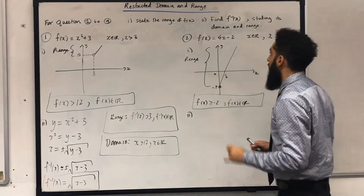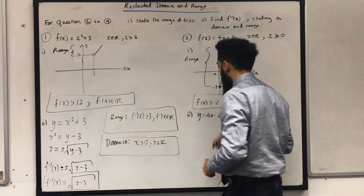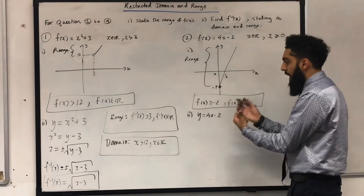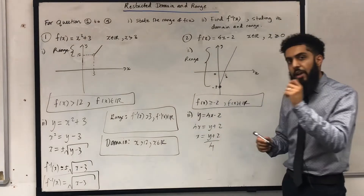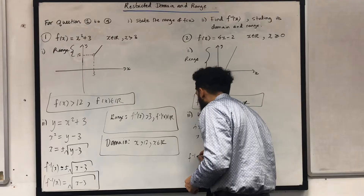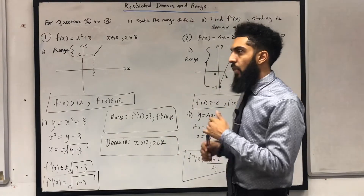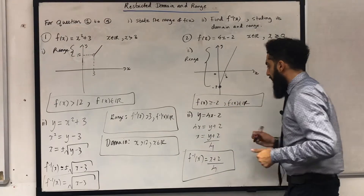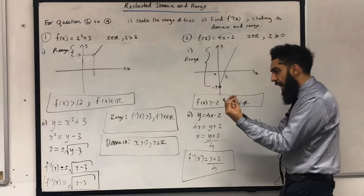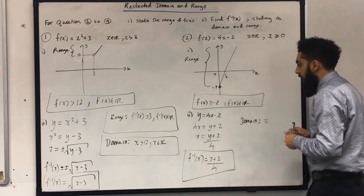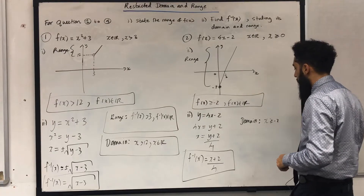For part 2, I want to find the inverse function of f. My first step is to let y equal 4x minus 2, then make x the subject. I have 4x equal y plus 2, hence x equals y plus 2 all over 4. So f inverse of x is equal to x plus 2 all over 4. To find the domain of the inverse function, it is just the range of the original function. Using correct notation, x is greater than or equal to minus 2, x is a real number.